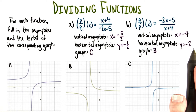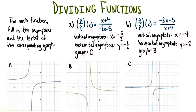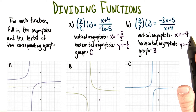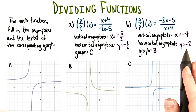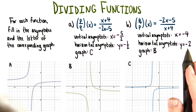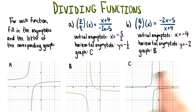Moving on to our second function, q over p of x, the vertical asymptote is x equals negative 4. The horizontal asymptote is y equals negative 2. And that means that this goes with graph B.